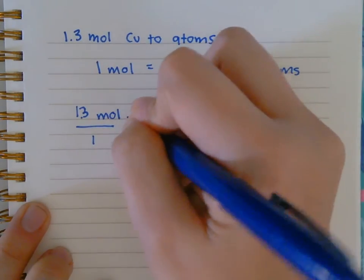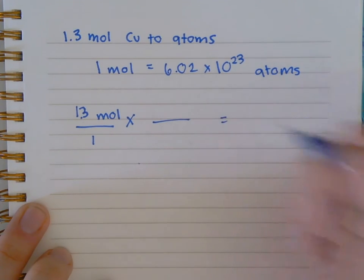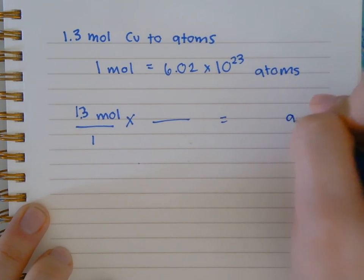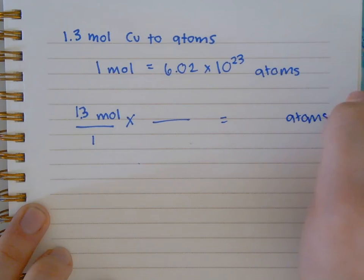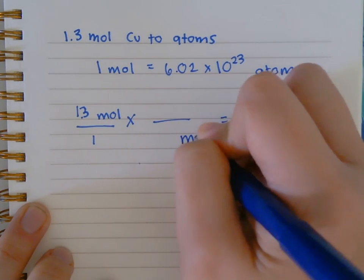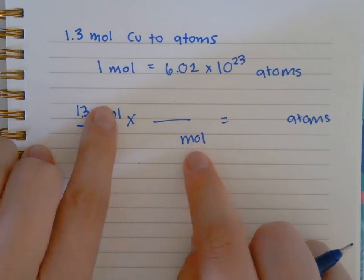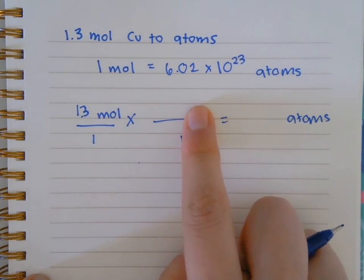What I want to end up with in my answer is atoms, so I have to cancel out moles. That means I have to put moles at the bottom because if it's at the top and the bottom they'll cancel out.